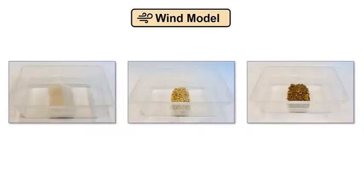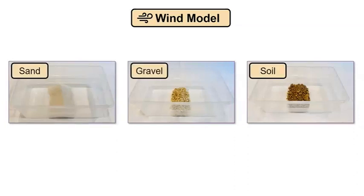We also have three land materials that I put into bins. The land materials are sand, gravel, and soil. Let's use these materials to represent the land around the Sphinx.